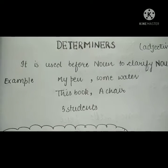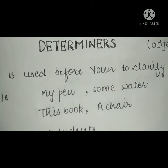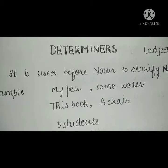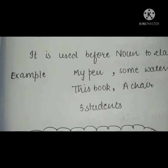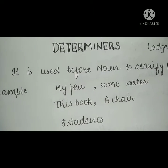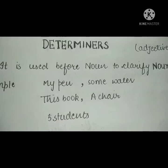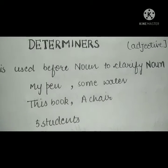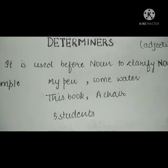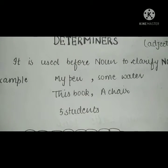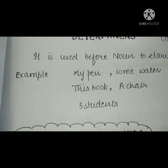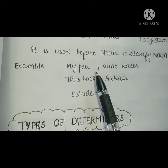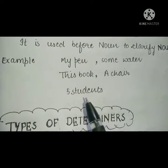Firstly, I think there is a root cause — root knowledge that you get into grammar — and that is your Determiners topic. Today we will do Determiners and then we will cover English topics further. So, what are Determiners? It is used before a noun to clarify the noun. You are using such a word to clarify, to determine the noun — that's why we call it Determiners. For example: my pen, some water, this book, a chair, five students.